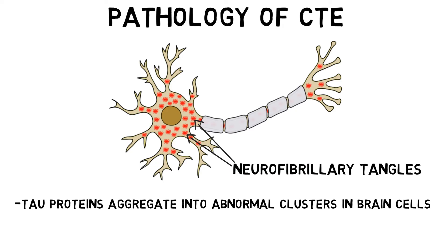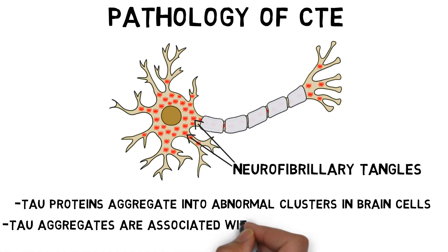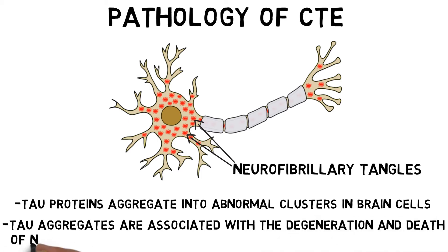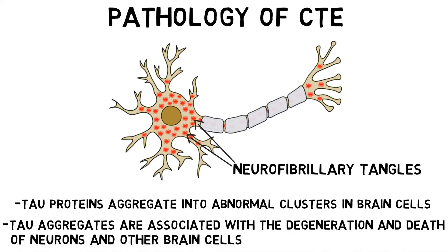The role of tau aggregates in disease progression is still not fully understood, but it's thought they can disrupt cellular communication, and their presence is associated with the degeneration and death of neurons. They also seem to be able to spread throughout the brain, so a neuron that develops neurofibrillary tangles may cause surrounding neurons to develop them as well.